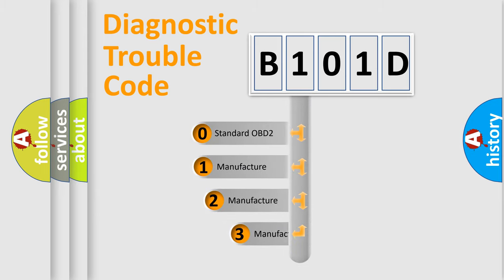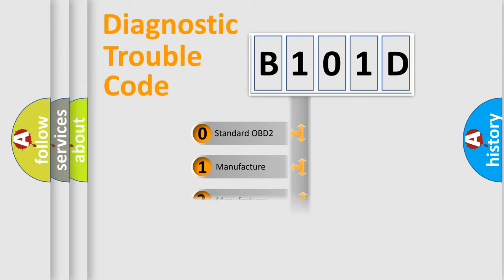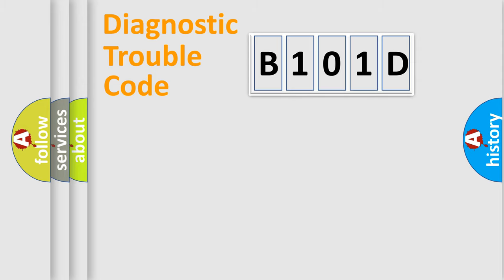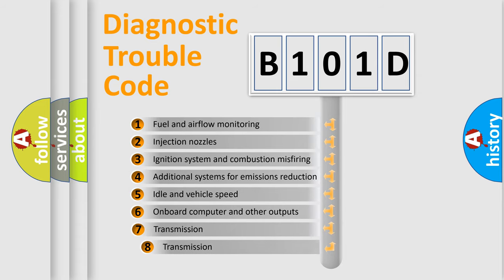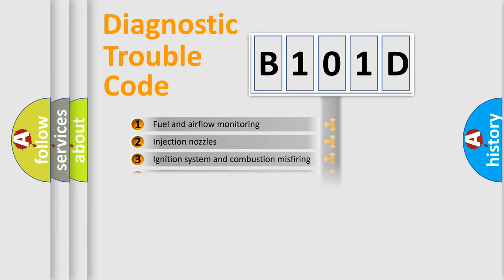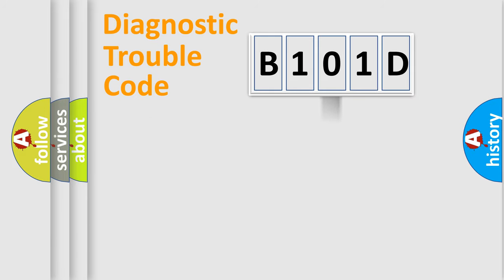If the second character is expressed as zero, it is a standardized error. In the case of numbers 1, 2, or 3, it is a manufacturer-specific error. The third character specifies a subset of errors. The distribution shown is valid only for the standardized DTC code.